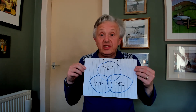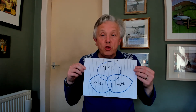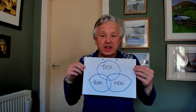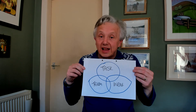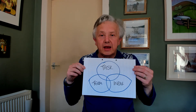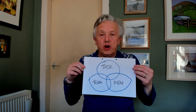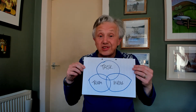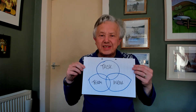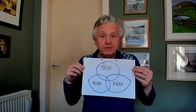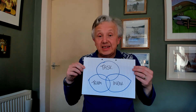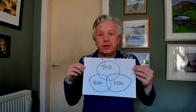So my suggestion to you would be to have a think about what you need to do to accomplish task, what you need to do to keep the team together and working together effectively, and what you need to do to keep each individual on track. And if you focus on all three, what tends to happen is you get more done, you get more done well, and you also take the team and each individual with you. So that's John Adair's action-centered leadership.